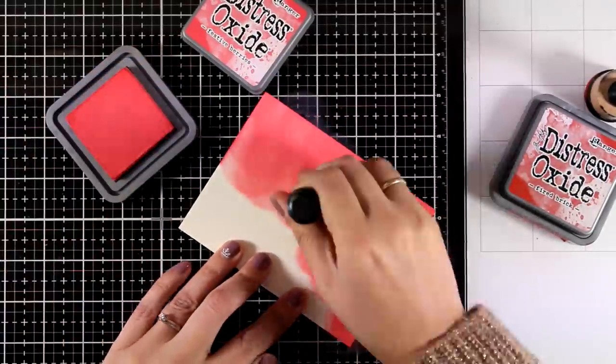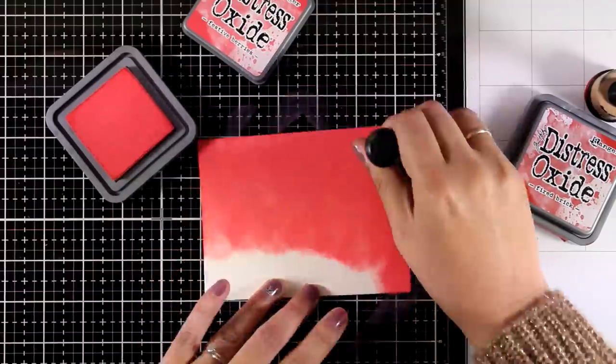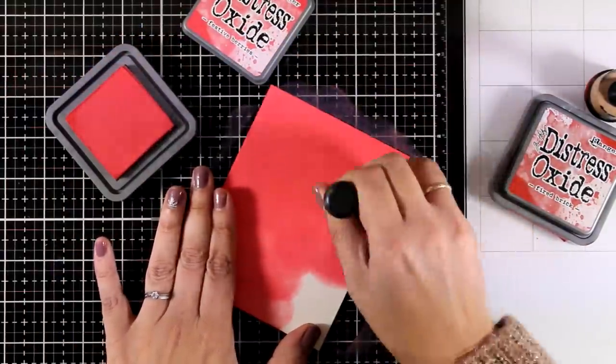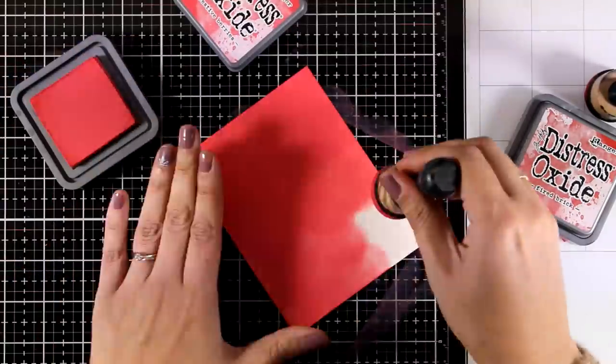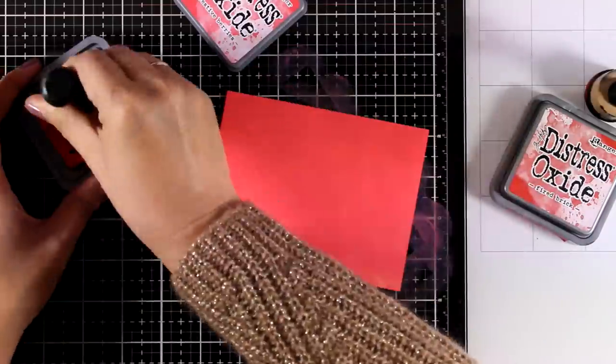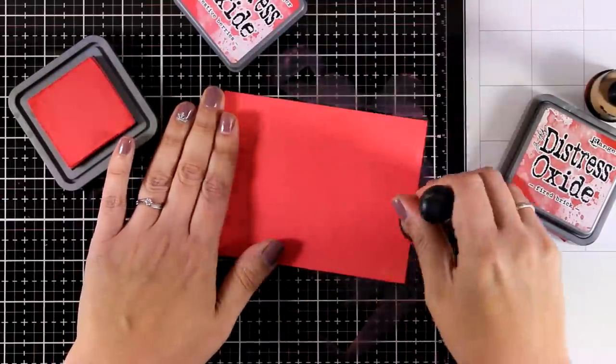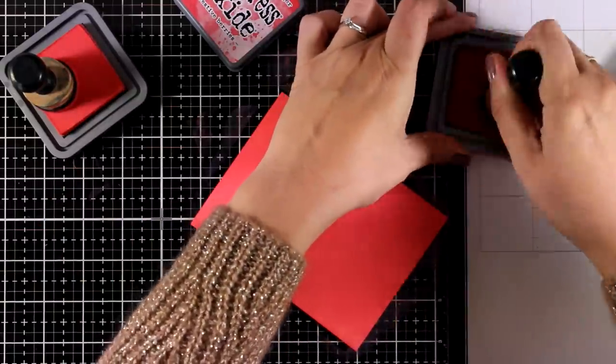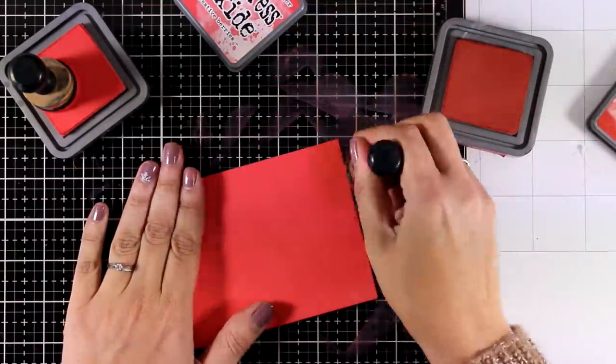All I'm doing here is to create my background using my distress oxide inks. I'm working on a mixed media paper that takes the distress oxidings beautifully and it is really a dream to blend oxides on top of that. I am using Festive Berries and Fired Brick.